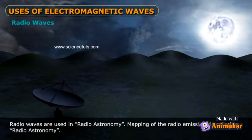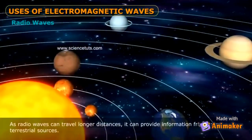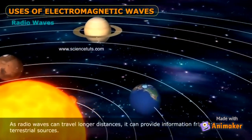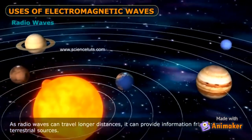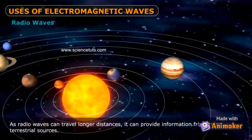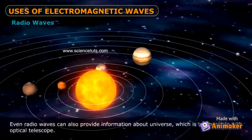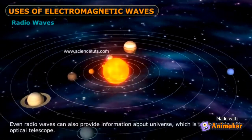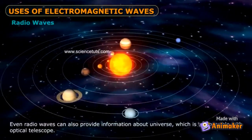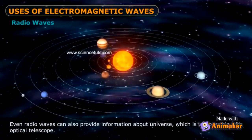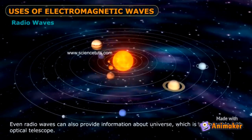Microwaves are also used in radar — radio direction and ranging. Radio waves are used in radio astronomy; mapping of radio emissions is called radio astronomy. As radio waves can travel longer distances, they can provide information from extraterrestrial sources, and even provide information about the universe that is not possible with optical telescopes.